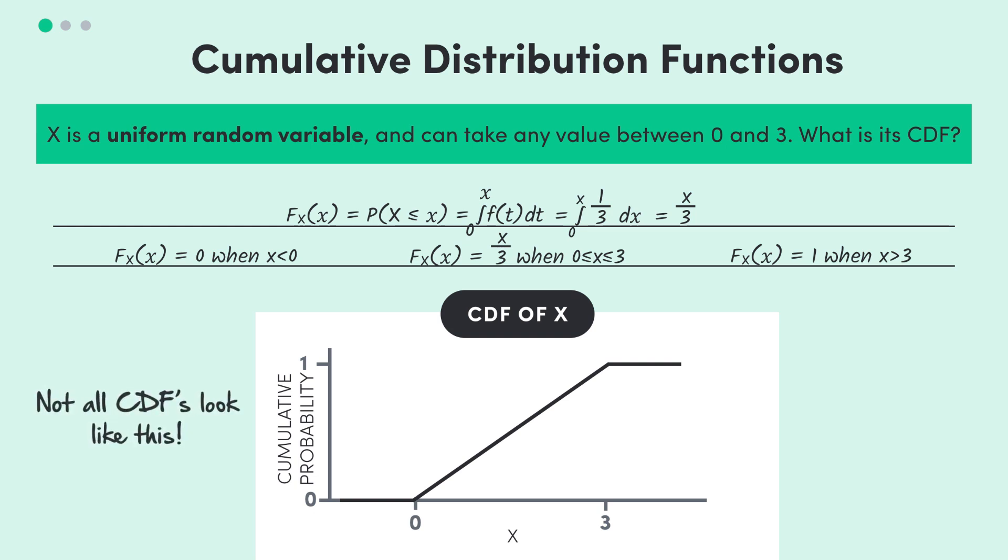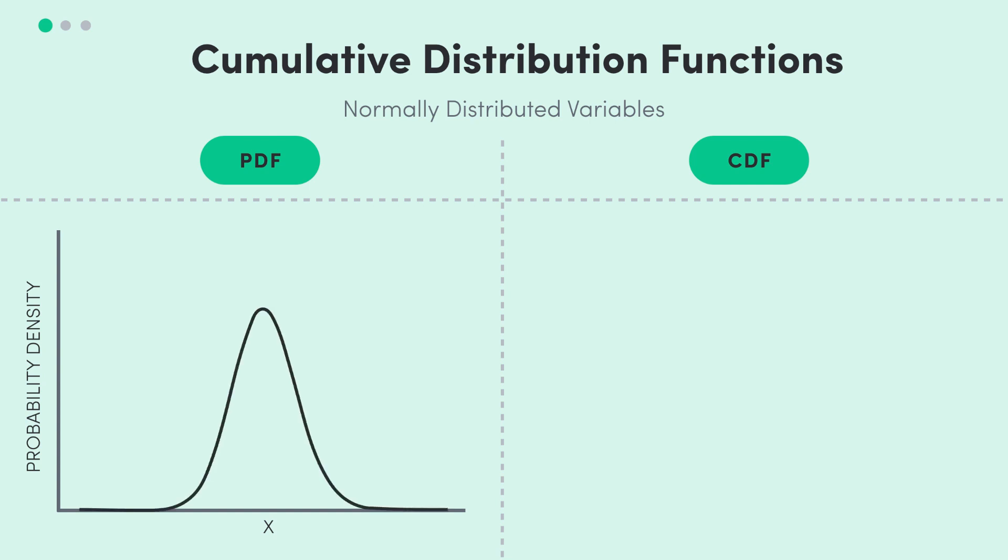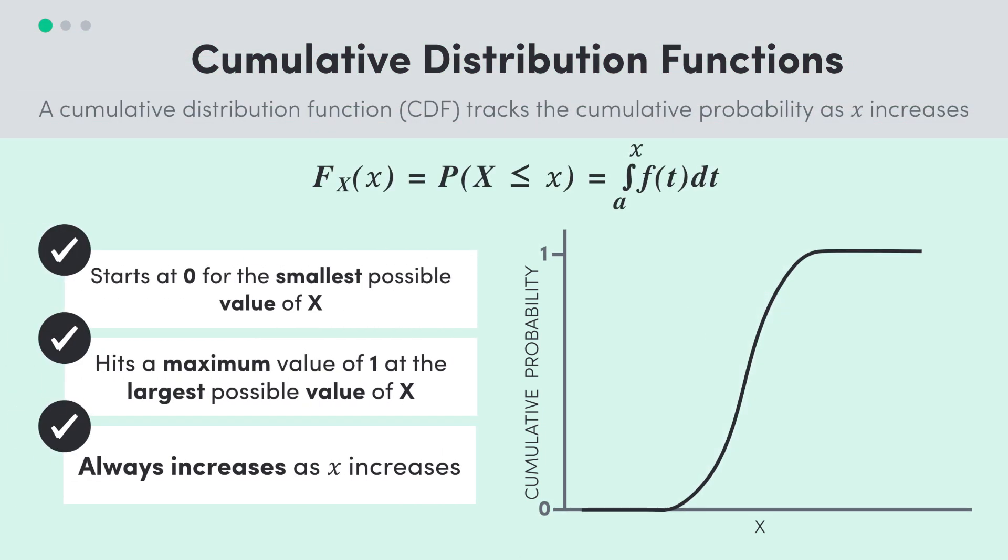Now of course, for different PDFs there'll be different CDFs, but that's the main process you'll need to follow if you ever need to find one. Normal random variables have PDFs that look like this, with high probability densities in the middle, and that'll result in a big increase in the cumulative probability in the middle as well. So that's the CDF, it's the area under the PDF up to a certain point, so it tells you how much probability you've accumulated at that point, or rather, the probability that the random variable is less than that value.